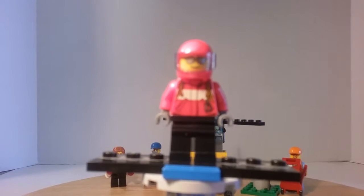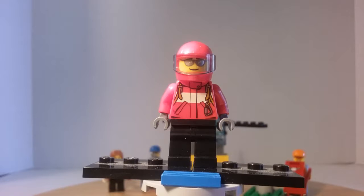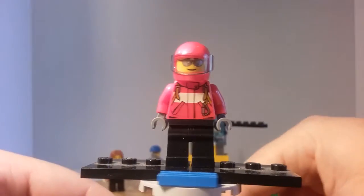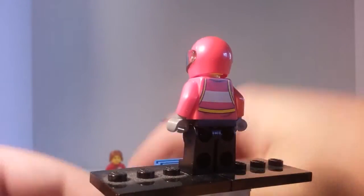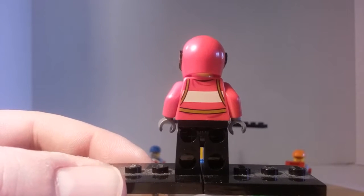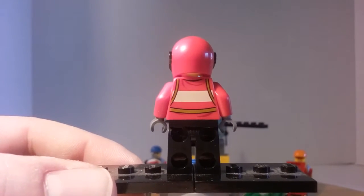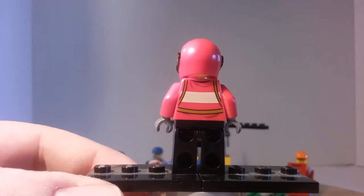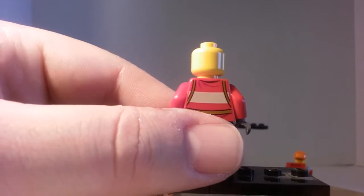For the last final minifigure, we get the pilot who comes with a helmet and an awesome jacket with belt straps around the arms. And no printing on the front of the legs, but he gets a cool pair of shades and an awesome face print. No back head printing either.